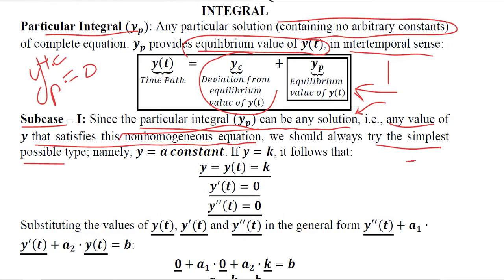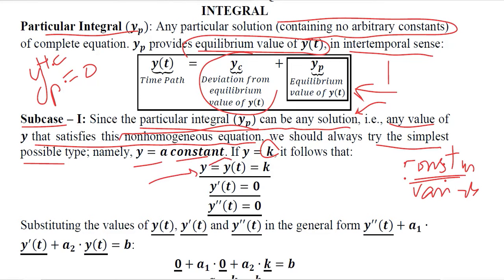That value can either be a constant or a variable. The simplest assumption is that the particular solution is actually a constant, so we let Y equal K, some constant. Since we have the original function Y=K, we can take its first and second derivatives — both of which are needed because we are dealing with a second order differential equation.